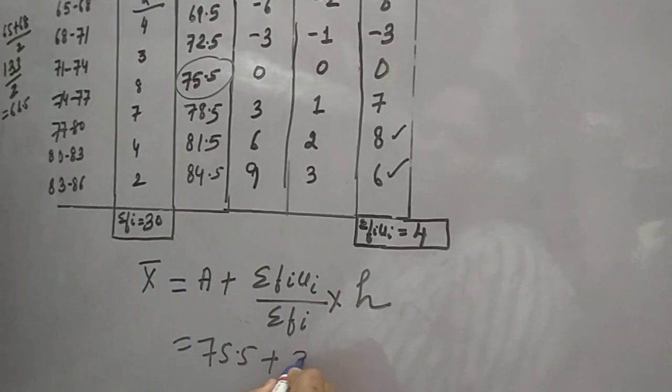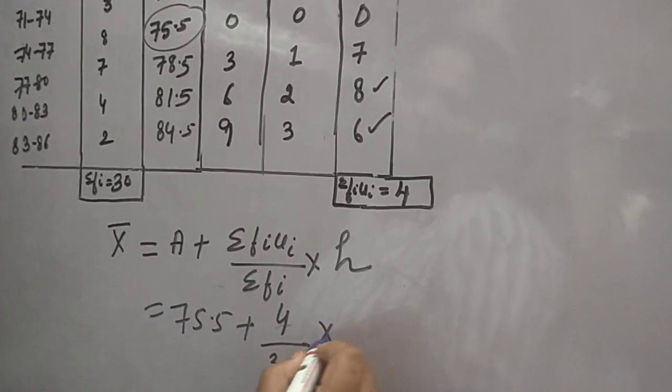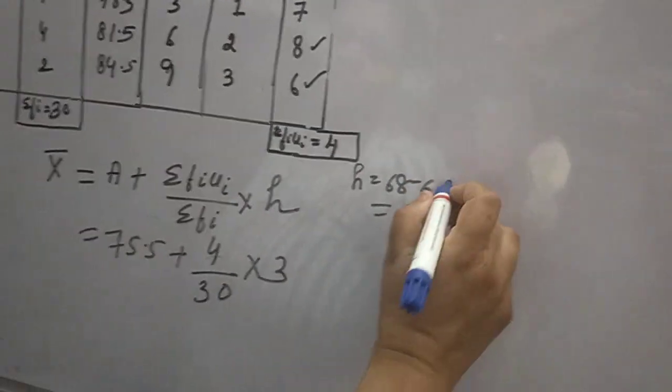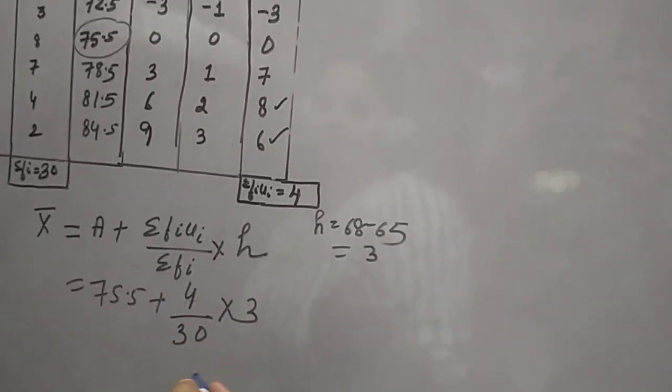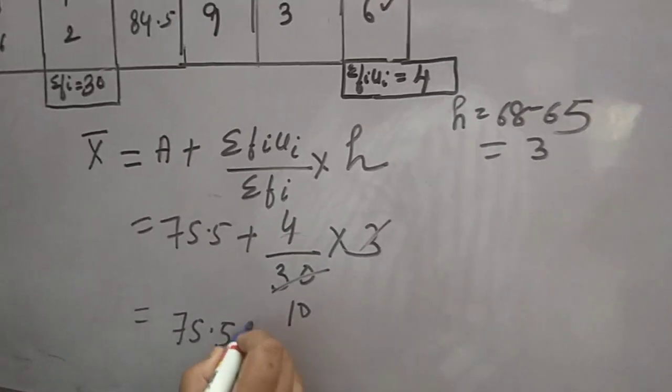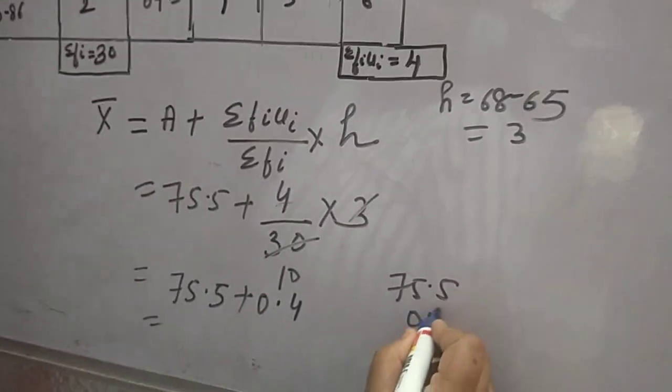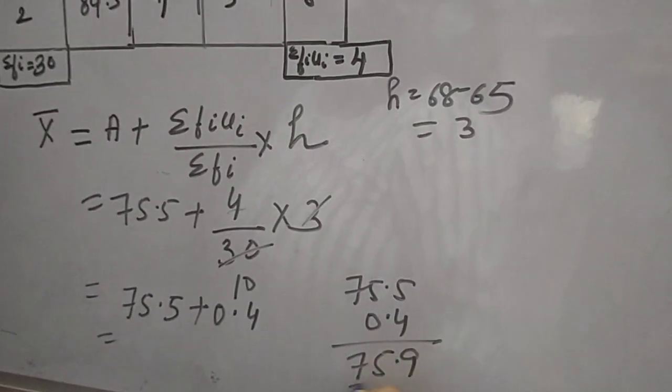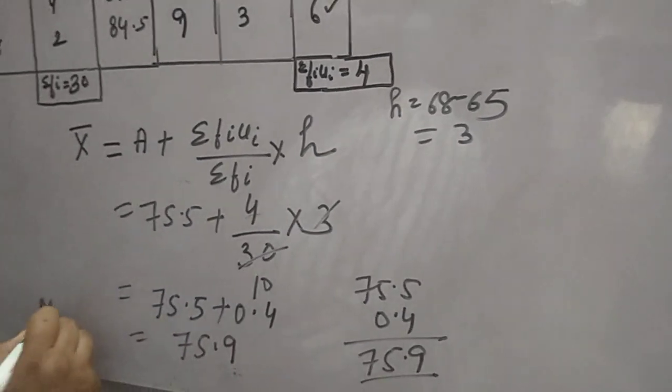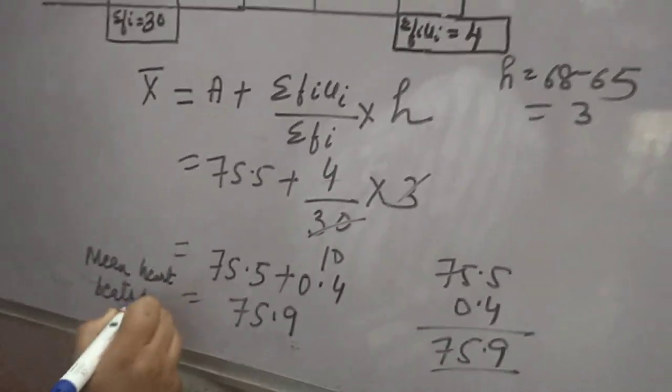A is 75.5. Sum of fi ui is 4. Sum of fi is 30. h is 3, because 68 minus 65 equals 3. So we calculate: 75.5 plus (4 divided by 30) into 3. 4 divided by 10 equals 0.4. So 75.5 plus 0.4 equals 75.9. This is the mean heartbeat per minute.